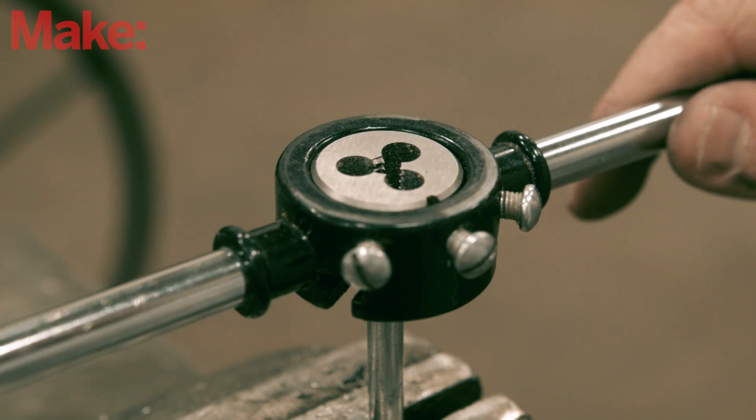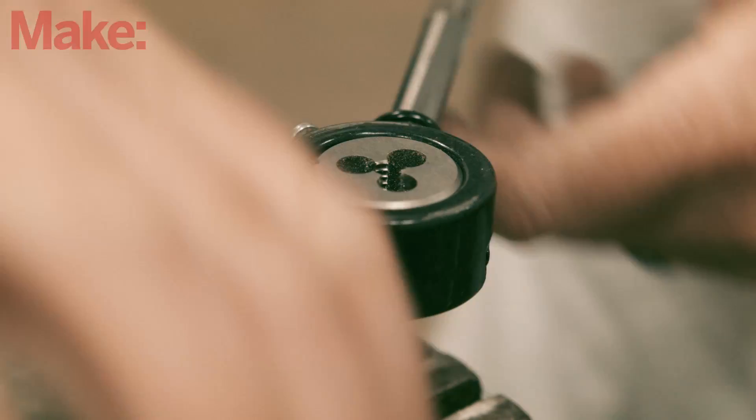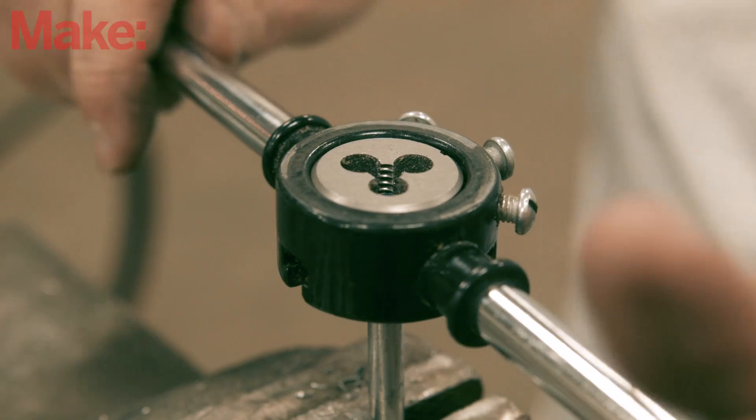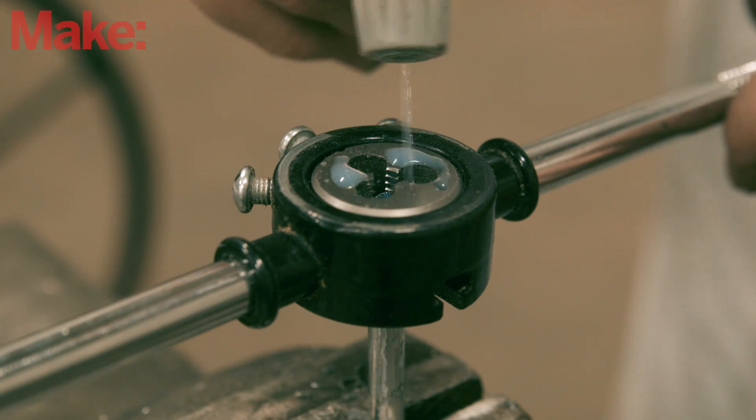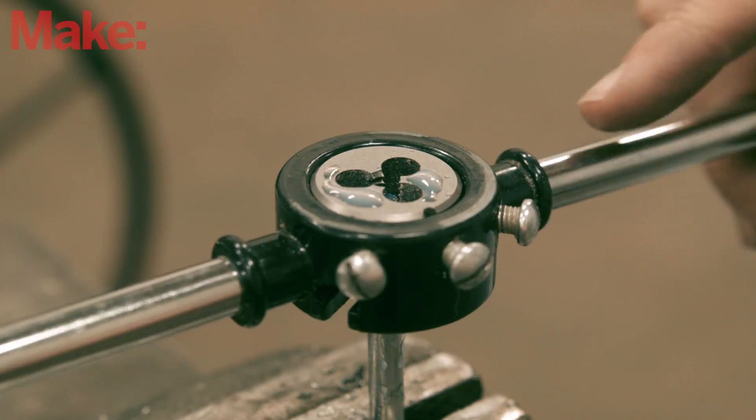Cutting the thread is almost identical to the tapping process. Make sure the die is aligned with the rod and apply pressure and then turn it onto the rod. Once the initial threads have been formed and the die is caught, you can remove pressure and continue turning, remembering to give it a backward turn once every revolution to break the chips.